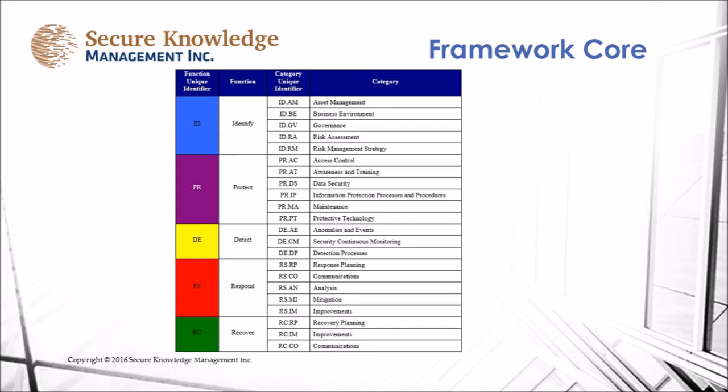Under Protect we have access control, awareness training, data security, information protection, processes and procedures, maintenance, and protective technology. Under Detect we have anomalies and events, security, continual monitoring, and detection processes.